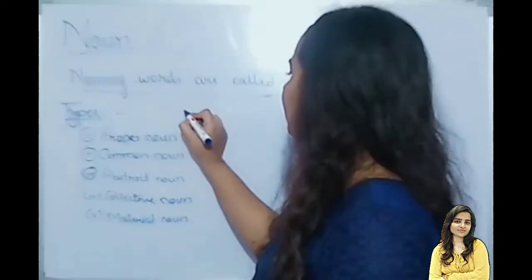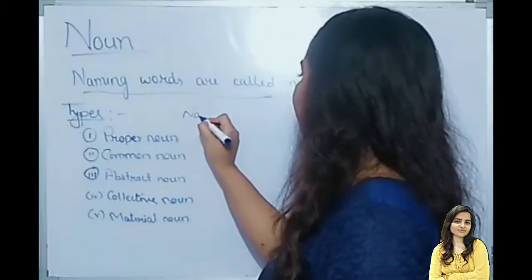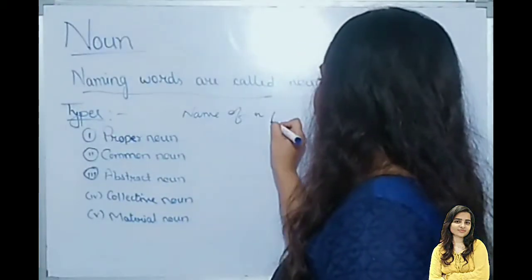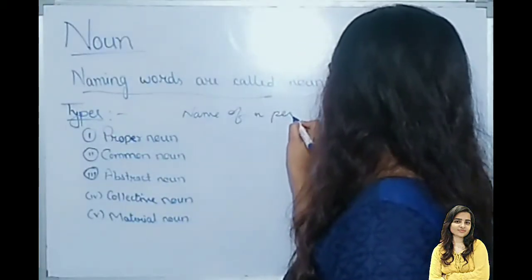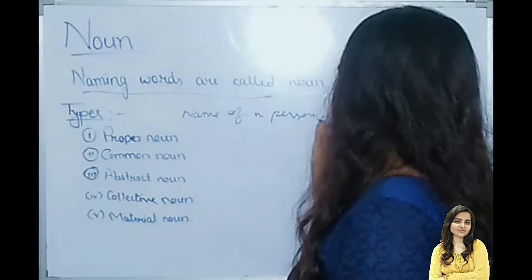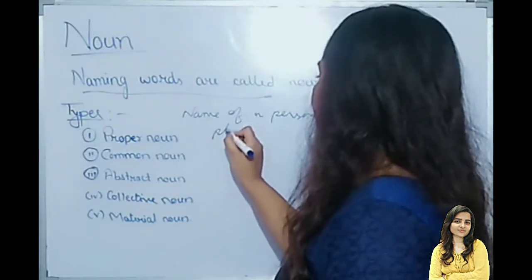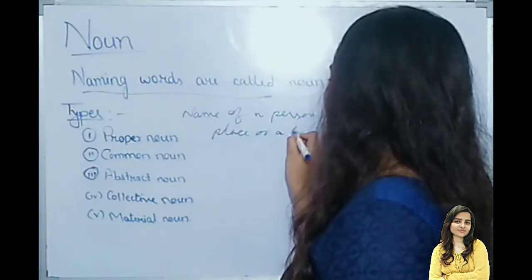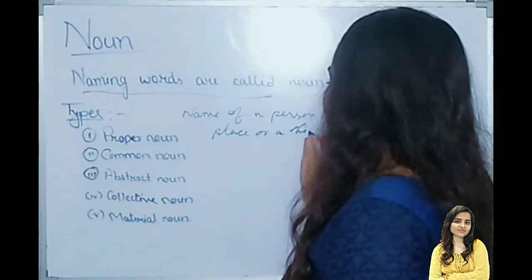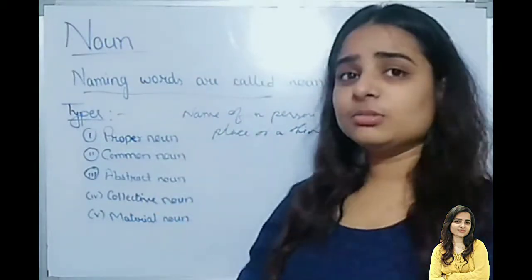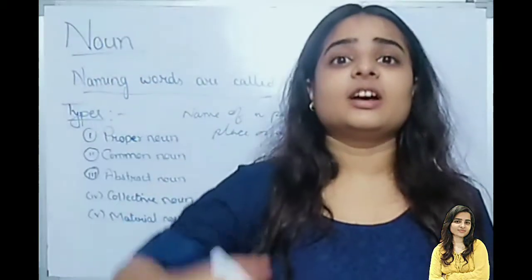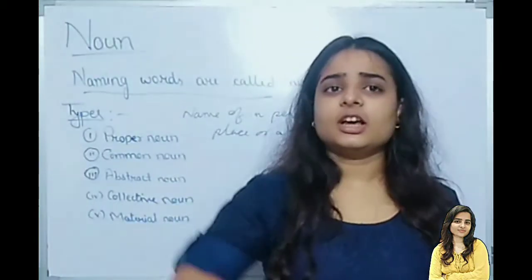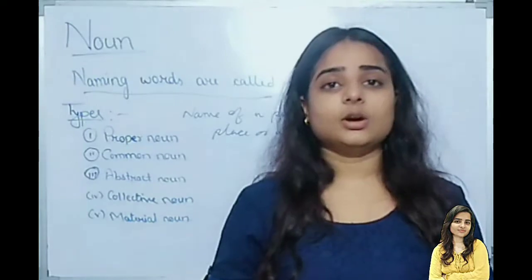So we can give one more definition: Name of a person, place, or a thing. Name of a person, animals, buildings, monuments, rivers — everything is a noun.